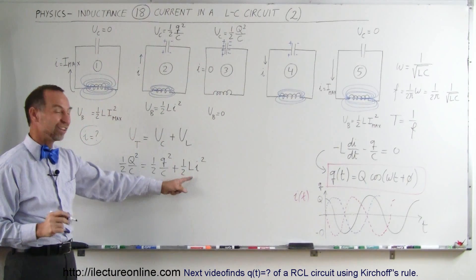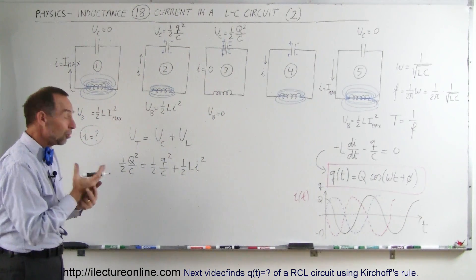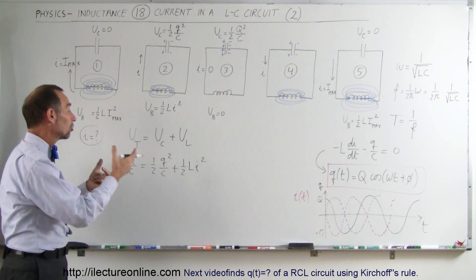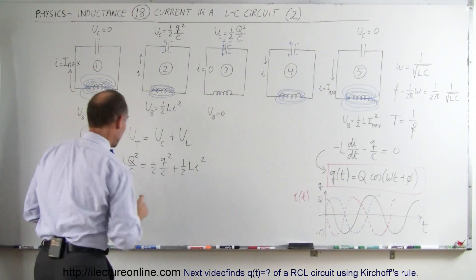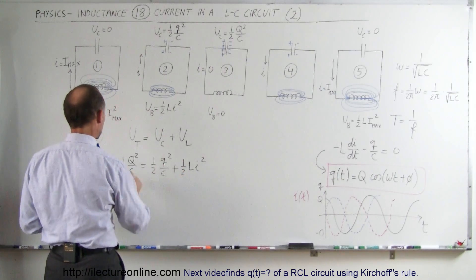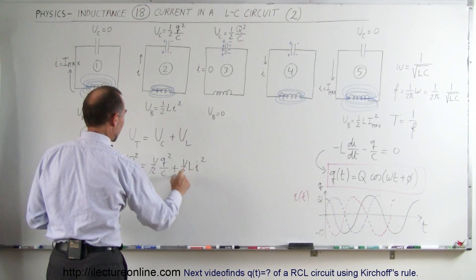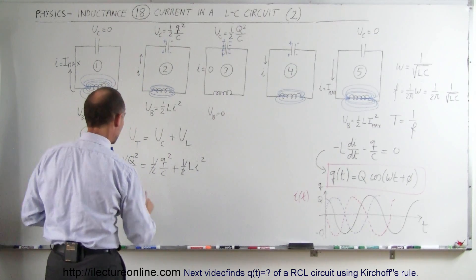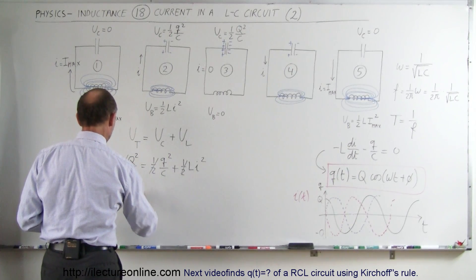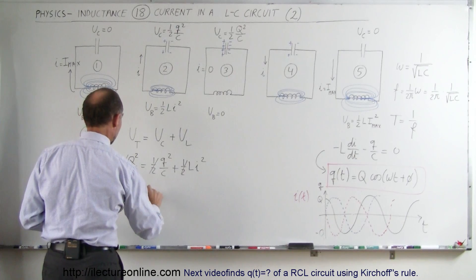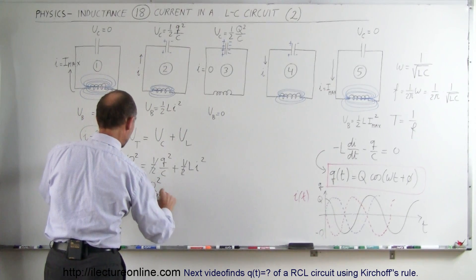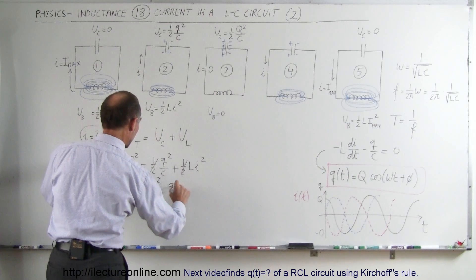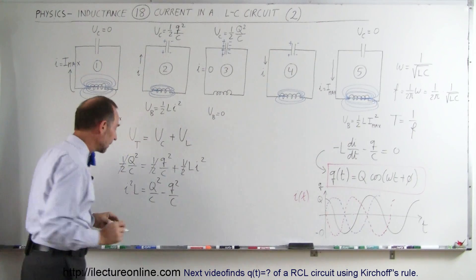So if we solve this equation for the current, that will let us know what the current is in terms of the charge on the capacitor. First of all, we can multiply both sides by two so all the one halves disappear. And then we can move the Q squared over C to the other side and turn the equation around. So we have I squared times L is equal to Q squared over C minus Q squared over C.